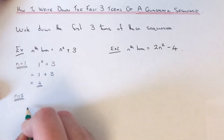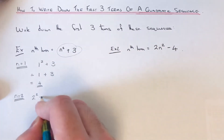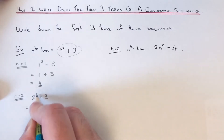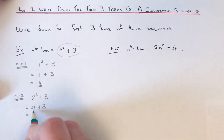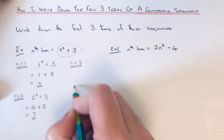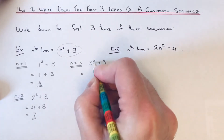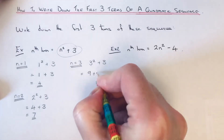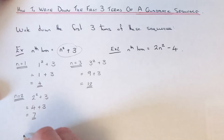So let's work out n equals 2 next — this is our second term. We just substitute that into the formula, so it will be 2 squared plus 3. 2 squared is 2 times 2, so that is 4 plus 3, which gives an answer of 7. To get our third term we sub in n equals 3: 3 squared plus 3. 3 squared is 9, so 9 plus 3 gives an answer of 12. So our first three terms are 4, 7, and 12.